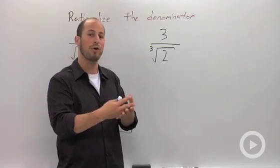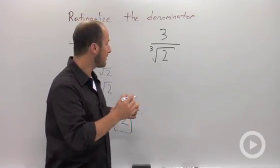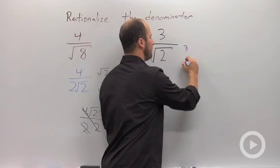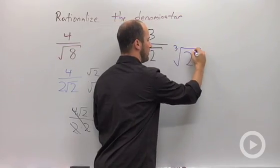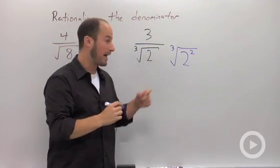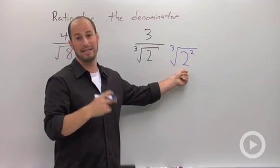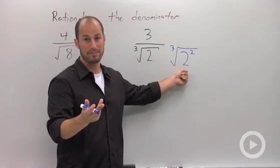In order to get something out of a 4th root, you need 4. So thinking about this, I need the cube root of 2 squared. I have one 2. I then need 2 more to make 3.